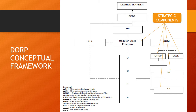Let us go to the relationship of the DORP program and OHSP. As mentioned in part one of our slides, the primary objective of the DORP is to prevent students from dropping out. At the same time, it motivates those who are out of school to return and finish basic education. So, in cases where a SARDO cannot be saved, he has the option to participate in OHSP so that he can obtain functional literacy.